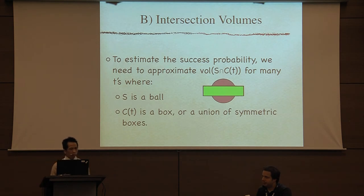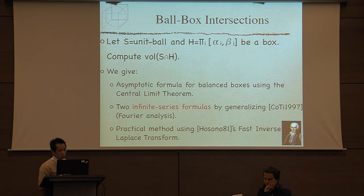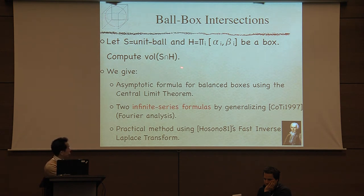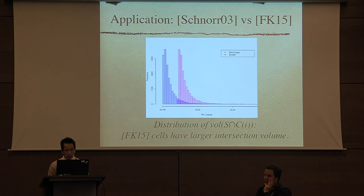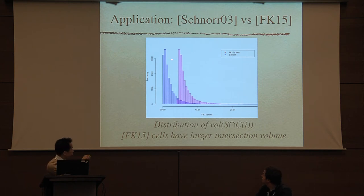We need to compute the intersection volumes of a ball with a box, or a union of symmetric boxes as in the natural partition. The good news is we can do it. We give asymptotic formulas, infinite series formulas, and in practice use a fast inverse Laplace transform to compute the volume of a ball-box intersection. As an application, we now understand why the FK15 algorithm was better than Schnorr's: they had much bigger volumes, which is why the Japanese records were faster. That's what this computation shows.